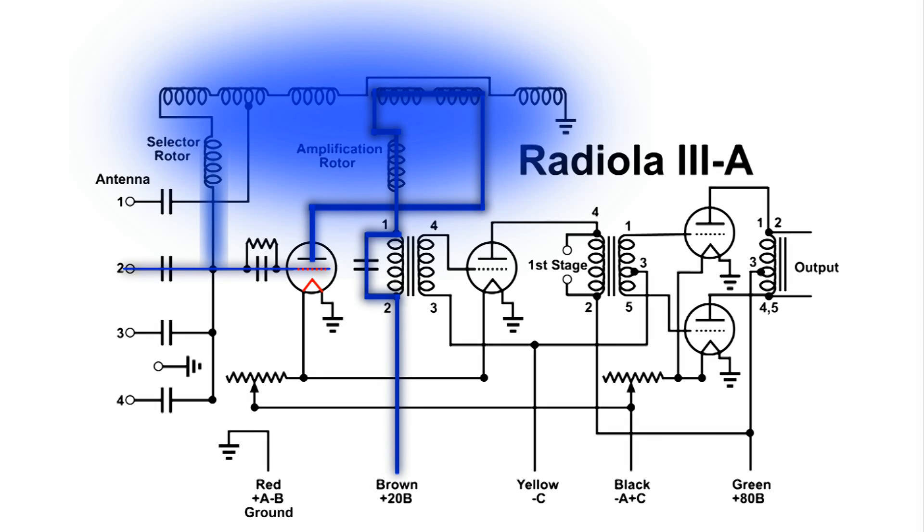Now this rectified audio from the RF signal, since it is on the control grid, also gets amplified by the same tube. And this audio signal goes through the coils, but this time notice that it goes through the audio transformer. And that gets magnetically coupled to the secondary of the next stage.